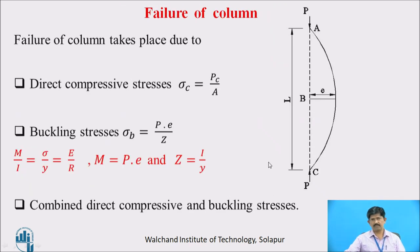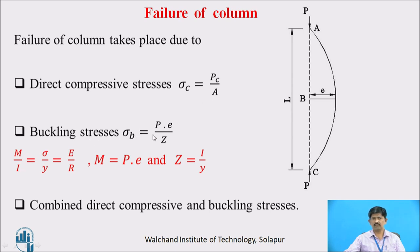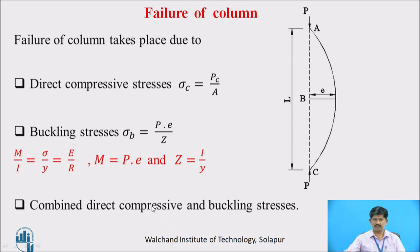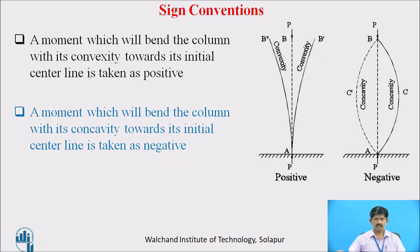How does failure of a column take place? In the case of a short column, failure takes place by direct compressive stress — as it is not a long column, it fails by crushing. The crushing stress or compressive stress equals compressive load divided by area. In a long column, failure takes place by buckling stress, where buckling stress σ_B equals P·e/Z, where e is the eccentricity of the buckled column and Z equals I/y, which is the section modulus. In between long and short column, failure may take place by the combined effect of direct compressive and buckling stresses.